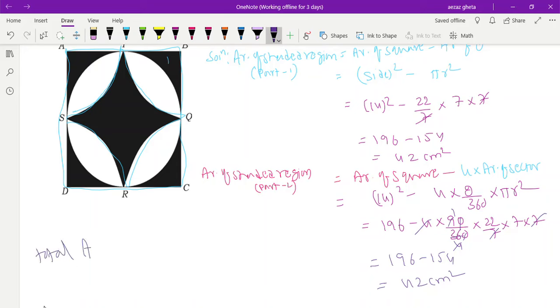Total area will get 42 plus 42 will get 84 centimeter squared. Hope you all understood. It is like looking tough but very easy, very easy. Thank you so much. If you understood then press the like button.